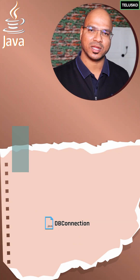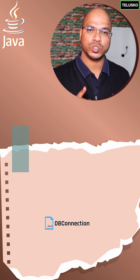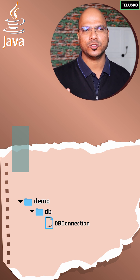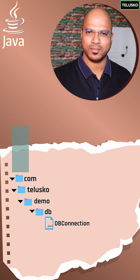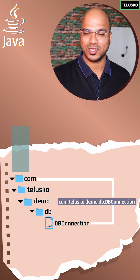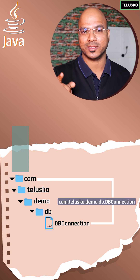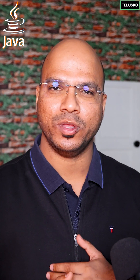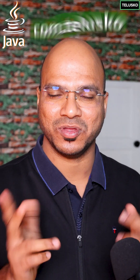For example, a class called DbConnection belongs to a 'db' folder, which belongs to your project 'demo', which belongs to 'talisco.com'. So you can form a unique package name: com.talesco.demo.db.DbConnection. By reversing your domain name, you ensure your library name is unique throughout the world.